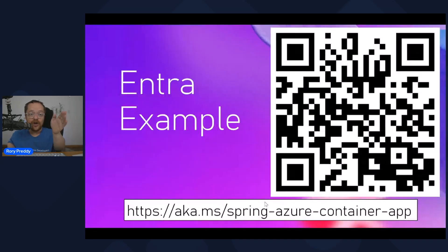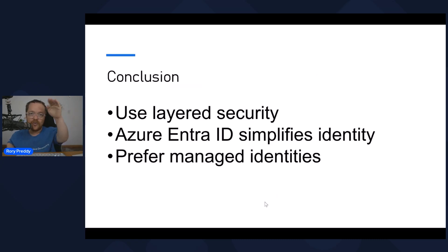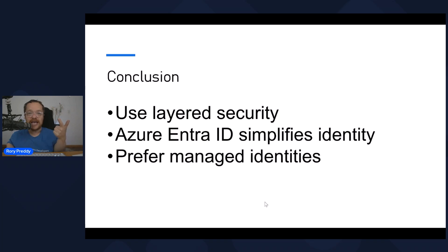I've got this example ready for you at aka.ms/spring-azure-container-apps. It's got the end-to-end Entra example along with how to pull that profile from your Graph. Now you can see it's really done with managed identities. Going back to the other weeks, we've got a sample that uses managed identities and you can go chat with some of your services. In conclusion: use layered security, use Azure Entra ID to layer it correctly, prefer managed identity. With managed identities and Entra ID, you've got authorization and authentication, and you can use role-based access control with predefined roles. If you want to roll your own, you can use user-managed identities too.